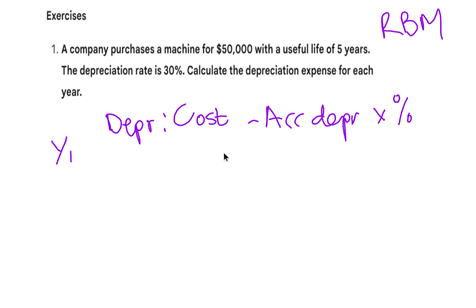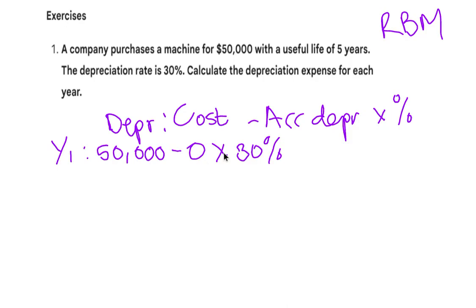In this case, the question says a company purchases a machine for fifty thousand with a useful life of five years and a depreciation rate of thirty percent. Calculate the depreciation expense for each year. In year one, depreciation will be fifty thousand minus zero — since we have no depreciation for the previous year — times thirty percent. So fifty thousand times thirty percent gives us fifteen thousand.